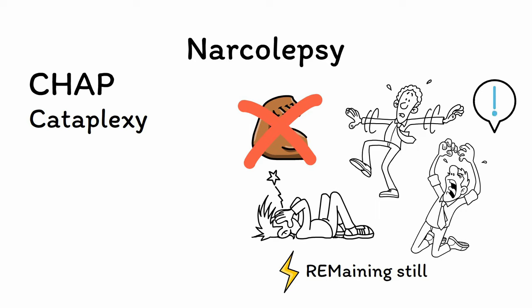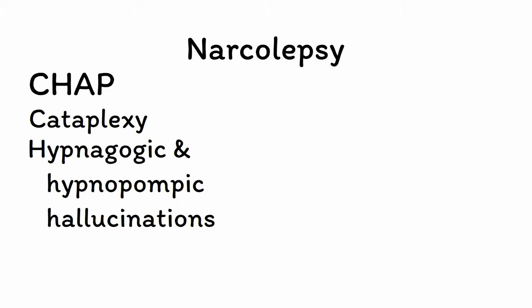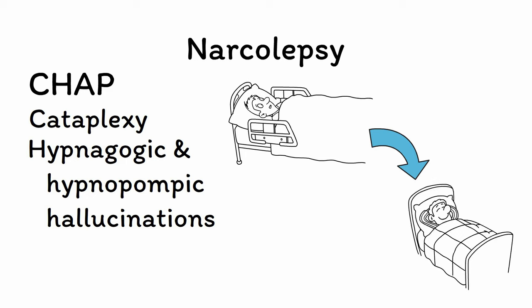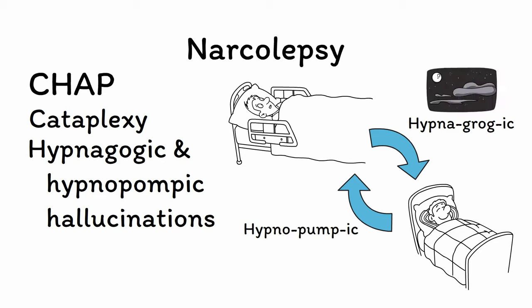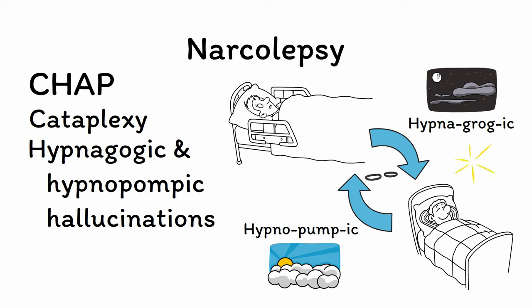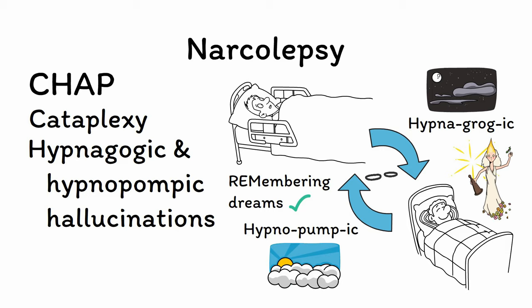Cataplexy is unique to narcolepsy, making it a very specific sign of this disorder. Next, H is for hypnagogic and hypnopompic hallucinations. The term hypnagogic refers to the transition from wakefulness to sleep, while hypnopompic refers to the transition from sleep to wakefulness. You can remember this difference by thinking that hypnagogic hallucinations occur when you're groggy at night, while hypnopompic hallucinations happen when you need to pump yourself up in the morning. People with narcolepsy experience vivid hallucinations during both of these sleep transitions, ranging from random lights or speckles all the way to fully formed images of people and places, representing abnormalities of the REM sleep state.